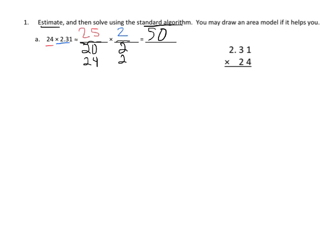Now we could use the area model if we wanted to, but we're just going to go straight to the standard system. So I'm going to write 2.31 over here times 24. Remember what we're going to do is we're going to multiply 2.31 by 100 and that's going to give us 231 times 24.